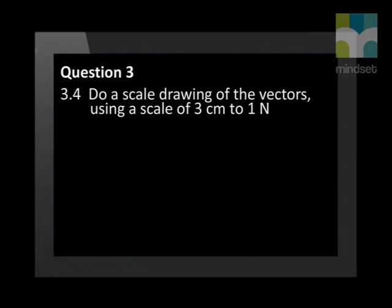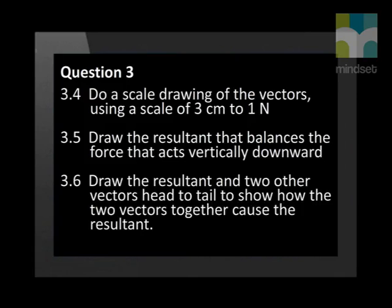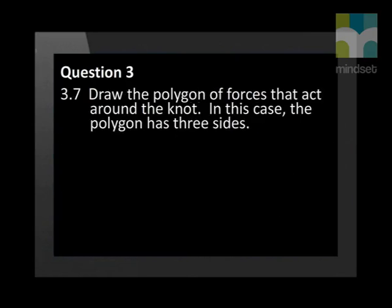Now you know that the angles are equal, do a scale drawing of the vectors using a scale of 3 cm to 1 newton. Draw the resultant that balances the force that acts vertically downward. Then draw the resultant and two other vectors head to tail to show how the two vectors together cause the resultant.